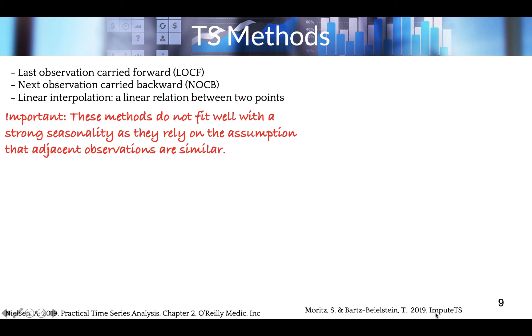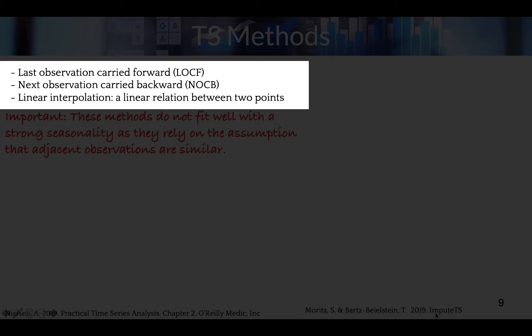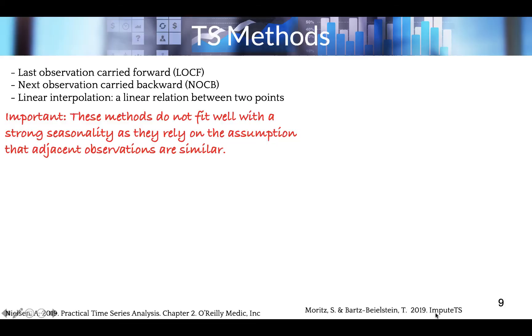Methods for data with trends include: Last Observation Carried Forward (LOCF), Next Observation Carried Backwards (NOCB), and linear interpolation, where a linear relation is assumed between two points. Interpolation can be done by looking at both past and future data, using non-missing values from adjacent points to compute values for missing data. Note that these methods rely on the assumption that adjacent observations are similar to one another.